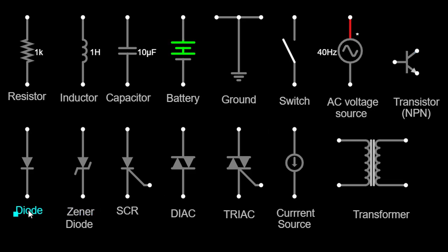The diode symbol features a triangle pointing toward a vertical line. Diodes allow current to flow in one direction while blocking it in the opposite direction. They are used for rectification, signal demodulation, and voltage regulation purposes.